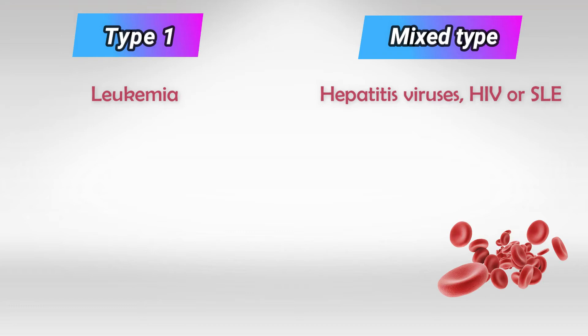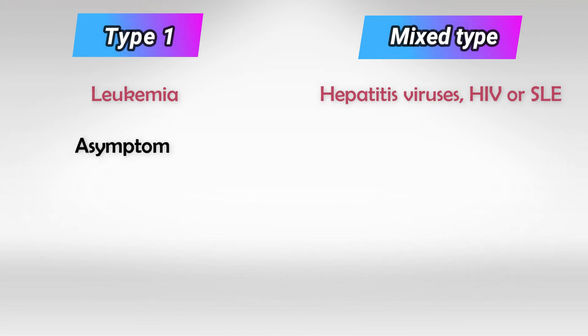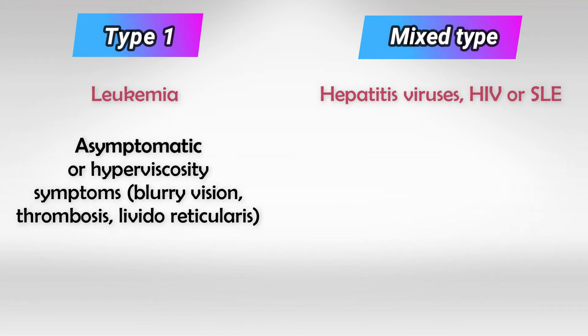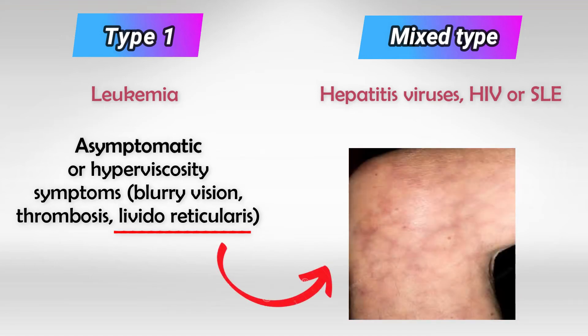It is very important to know the causes. Type 1 is largely asymptomatic, but you should expect symptoms of hyperviscosity, which presents as blurry vision with thrombosis and renal phenomena, and sometimes it causes livedo reticularis.